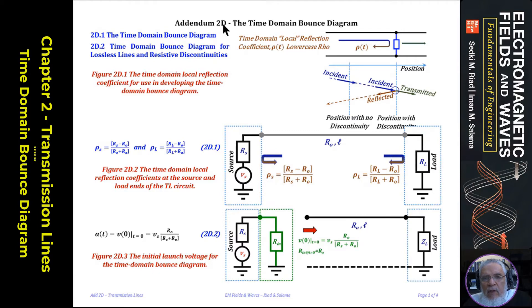Hello, this is Addendum 2D, the Time Domain Bounce Diagram, Chapter 2, About Transmission Lines, and it's a follow-up to the discussion in the body of the chapter.